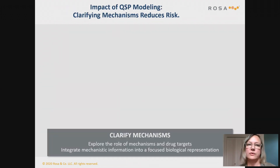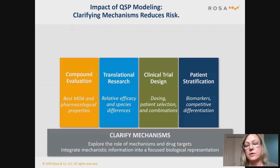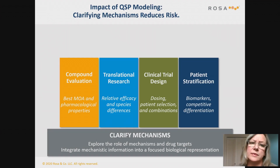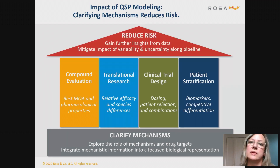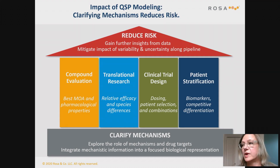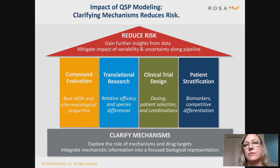So how is this useful in drug development? Once you have clarified the mechanisms by building your model, you can use it to inform every step of drug development — from compound evaluation all the way through to post-marketing studies. Ultimately, the goal is always to reduce risk and to get more information and insights out of the data you already have, so you can mitigate the impact of variability and uncertainty all along the pipeline.